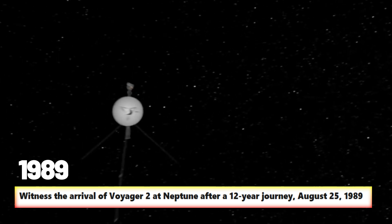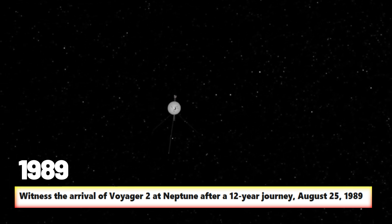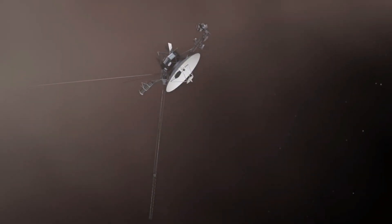Then in 1989, the final planetary flyby. After Neptune, the cameras were turned off to conserve power. The mission was complete, or so we thought. But the Voyagers had one more destination.